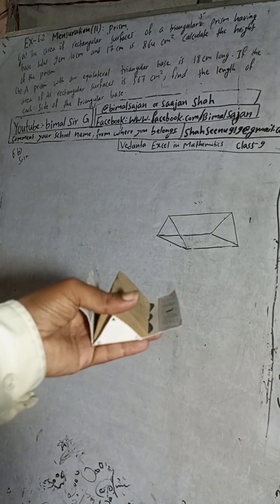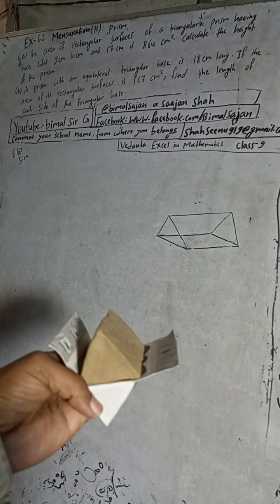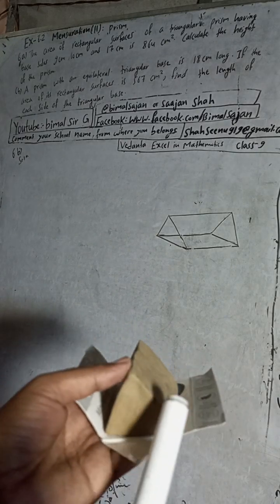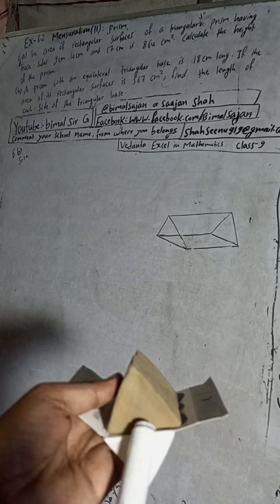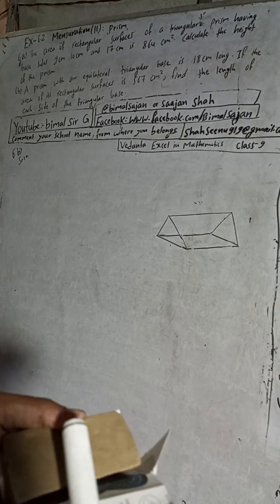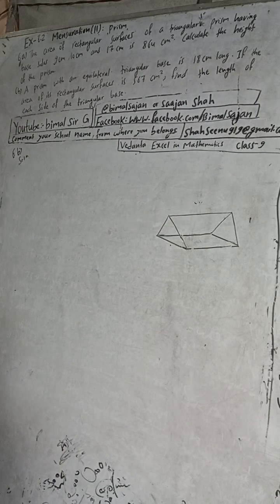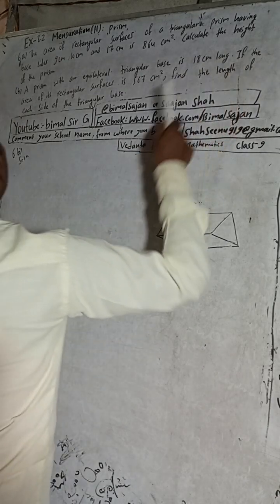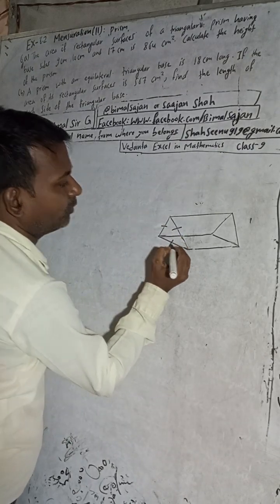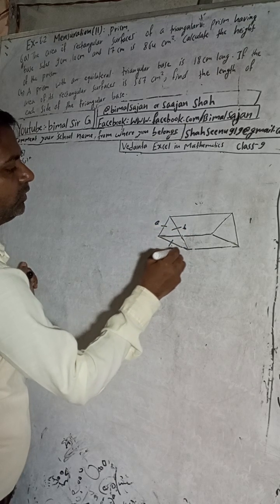I have drawn that figure. It doesn't look exactly like an equilateral base, but we can consider it. The triangular shape — equilateral means this side, this side, and this side are all equal. The area of its rectangular surfaces — this surface plus this plus this — three surfaces are given. We need to find the length of each side. Since it's equilateral, a = b = c, meaning all sides are equal.